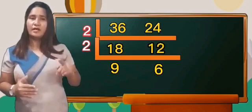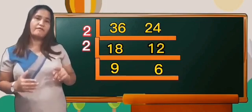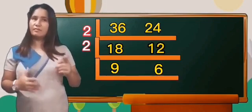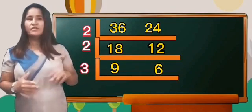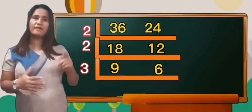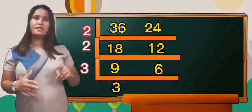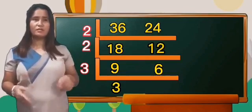Again, we can draw another division sign and find the smallest number that can be divisible by 9 and 6, and that is number 3. So, 9 divided by 3 equals 3, and 6 divided by 3 equals 2.